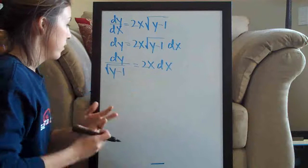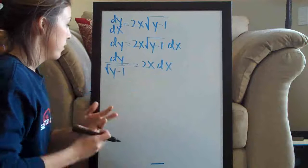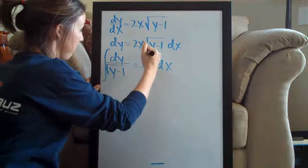We've successfully completed the first step — y's on the left side and x's on the right side. Now we want to go ahead and integrate both sides. We can do this as long as we do it to both sides of the equation, so we go ahead and integrate both sides.